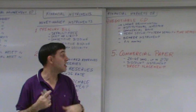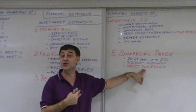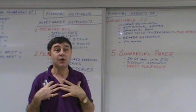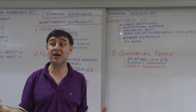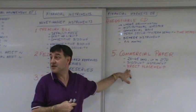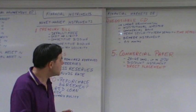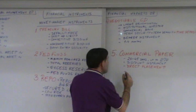Whenever the issuer can sell directly, they will always do so. They'll use an investment banker only when they're not well-known or reputable, or when they have a huge issue like $10 billion which is difficult to raise directly. Only then will they use an investment banker.